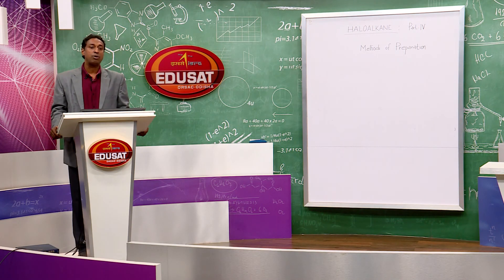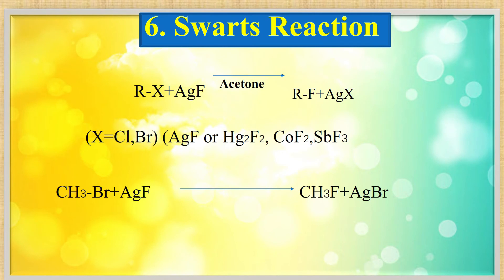Swarts reaction: used to prepare fluoroalkane from chloroalkane or bromoalkane, since direct fluorination is extremely exothermic and difficult. Reagents: AgF, CoF2, or SbF3. Reaction: R-X + AgF → R-F + AgX (precipitate). AgX precipitates out and can be separated easily, giving fluoroalkane.